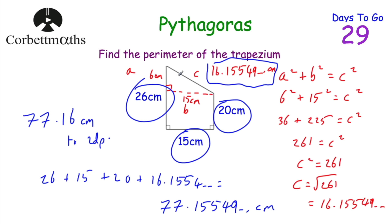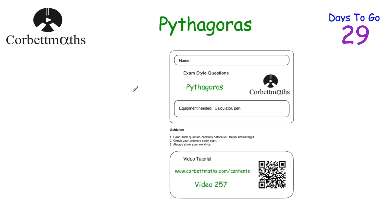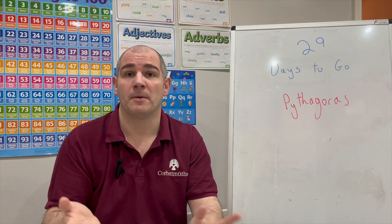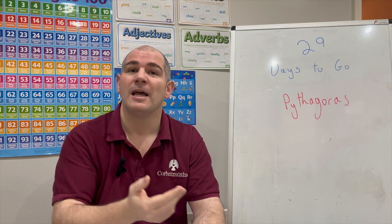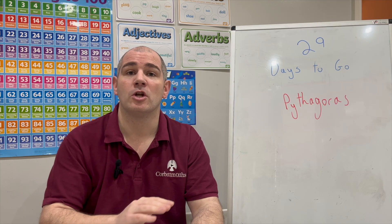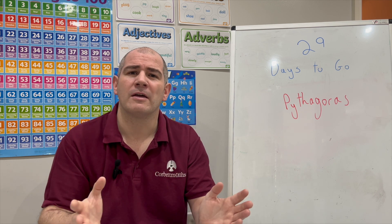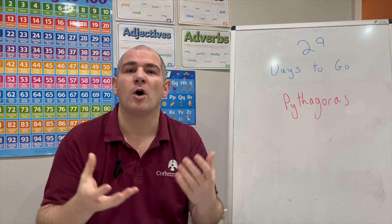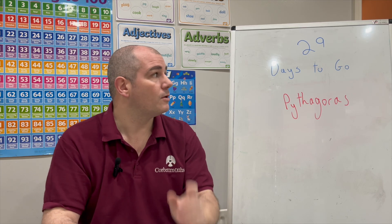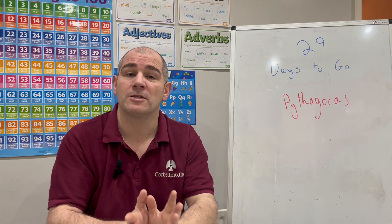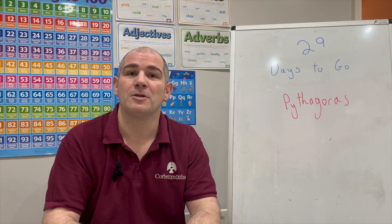Look out for Pythagoras's theorem in questions involving isosceles triangles, rectangles, trapeziums, or even finding distances between points on grids. If you want more practice, there's a link to practice questions in the description below. In today's video we've looked at Pythagoras's theorem — A squared plus B squared equals C squared — finding side lengths, showing if triangles are right-angled, and applying it in context. I highly recommend the practice questions. If you liked this video, please like and subscribe. There are 29 days to go — tune in tomorrow at 3 o'clock. Thanks, cheers, bye!